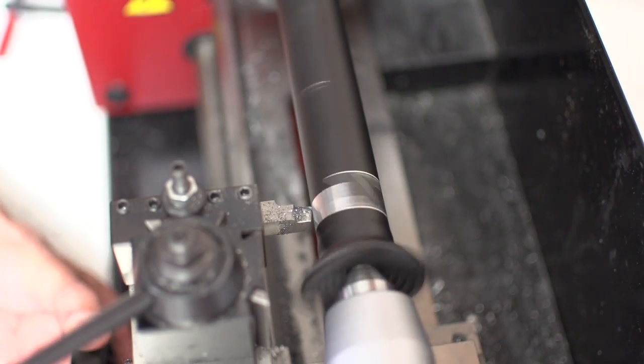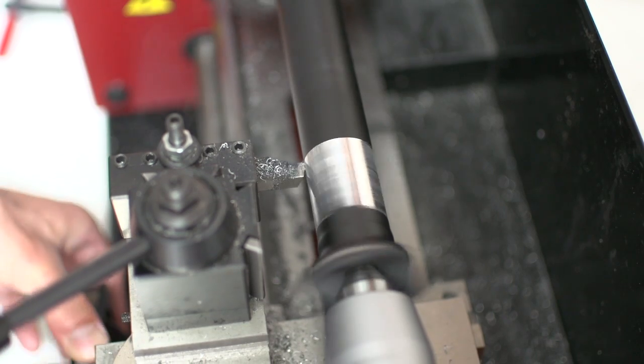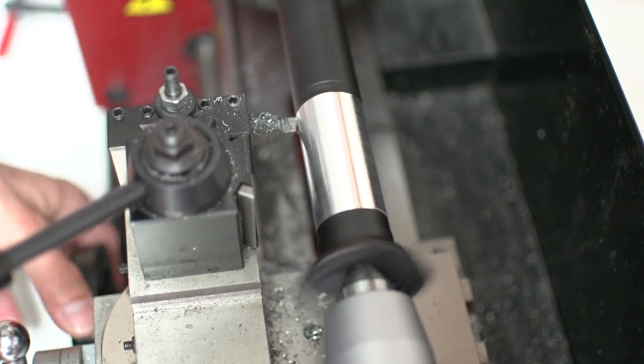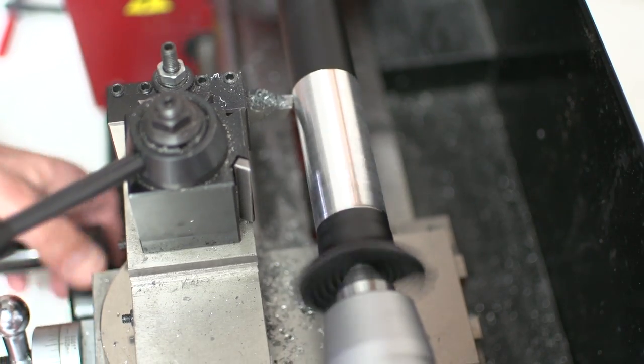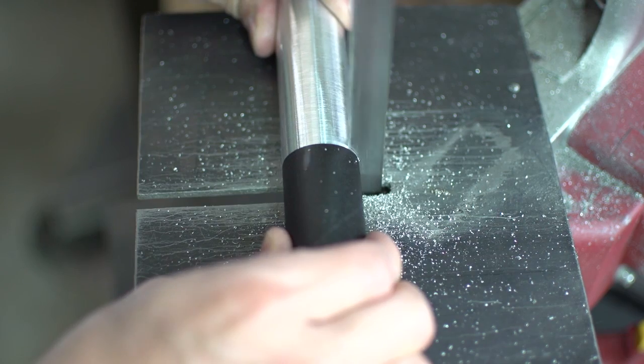You can see I've got an interrupted cut going on here. That's because I have the live center sticking into a threaded hole. So the tube is not correctly seated in the center there. But we'll be okay because this isn't a life or death situation.